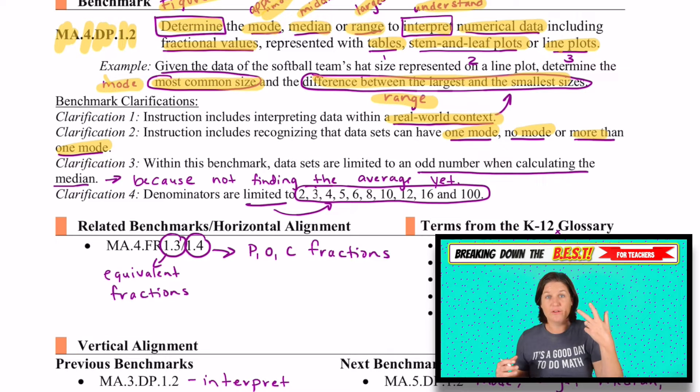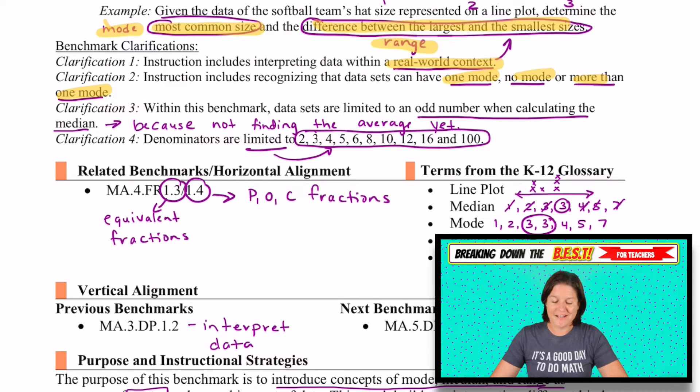no mode, or more than one mode. Remember, the mode is the value that appears the most. So for instance, if we have a bunch of data and we have one, two, three fours, and one, two, three fives, and those values appear the most, we would have two modes or more than one mode. If nothing repeats, then we would have no mode.